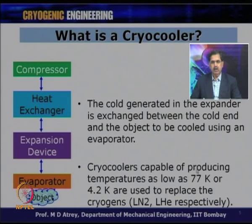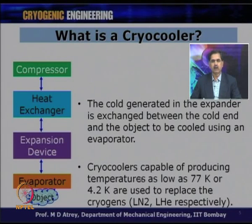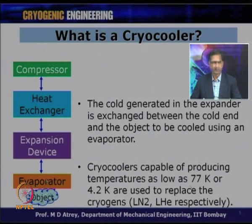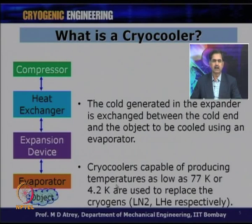Cryocoolers are capable of producing temperatures as low as 77 Kelvin or even below 4.2 Kelvin, and they can replace cryogens. In many places, liquid nitrogen, liquid helium, or liquid hydrogen cannot be used due to availability constraints or because cryogens cannot reach there in time. In such cases, a cryocooler can be designed for a particular application to generate the required temperature, replacing whatever was previously done using liquid helium, liquid nitrogen, or liquid hydrogen.